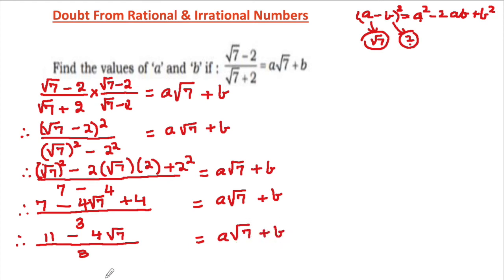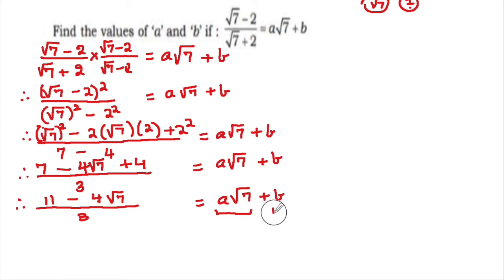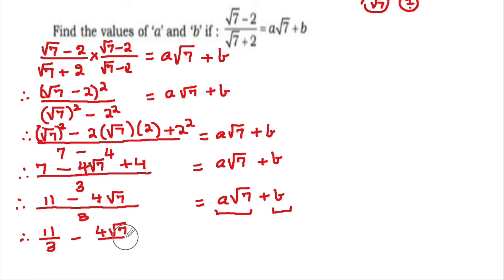Now we compare the left hand side with the right hand side. On the right hand side we have two terms, but here we have a fraction. So we split this to get two terms — 3 is the common denominator — and we write it as 11 upon 3 minus 4√7 upon 3.